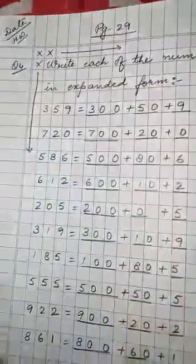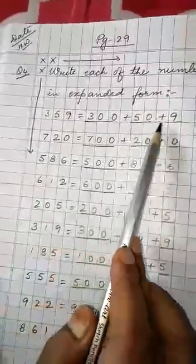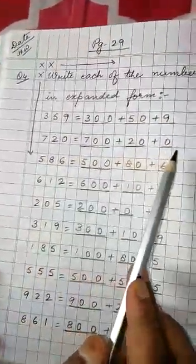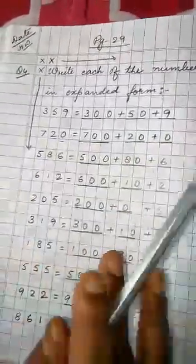Here you see how I have done all the questions. See, 359: 300 plus 50 plus 9. 720: 700 plus 20 plus 0. Why have I written 0 here? Because 0 is in ones place, so I have written 0.